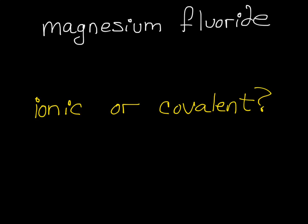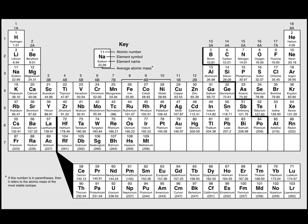So the first thing we should do is find both magnesium and fluorine on the periodic table. Magnesium is here and fluorine is here. If you remember, we look at this jagged line and everything to the left of the jagged line is a metal and everything to the right of the jagged line is a nonmetal.